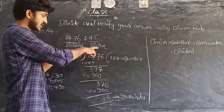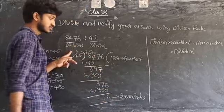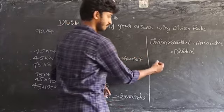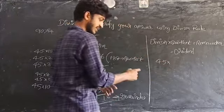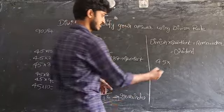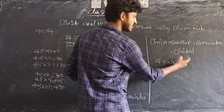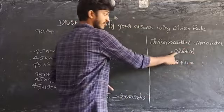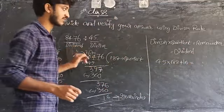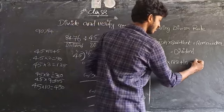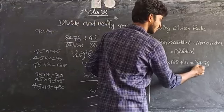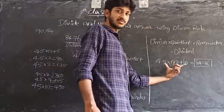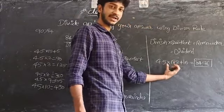What is the divisor? The divisor is 45, the quotient is 188, and the remainder is 16. The dividend is 8476. So we place these values: 45 into 188 plus 16 should equal 8476.